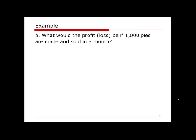For part b, what would be the profit or loss if only one thousand pies are made and sold in a month? From part a, the break-even point is twelve hundred pies. One thousand is smaller than twelve hundred, and any quantity lower than the break-even point generates a loss, so if we only produce one thousand pies we will definitely lose money.